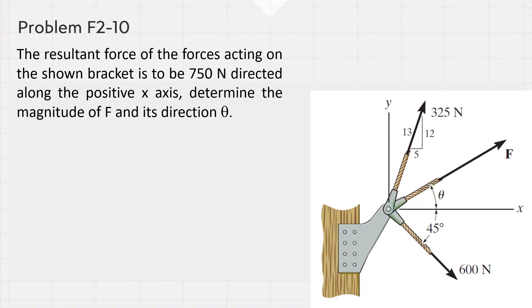Another problem: if the resultant force of the forces acting on the shown bracket is to be 750 newtons directed along the positive x-axis, determine the magnitude of F and its direction θ. It is given the magnitude and direction of two forces and the third one is unknown. Moreover, the magnitude and direction of the resultant force is given. Of course, each force has x and y components.